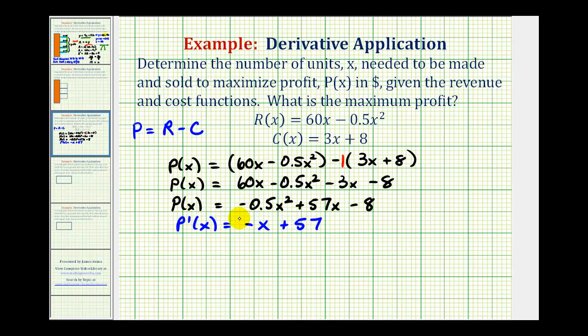Notice how this derivative is never going to be undefined, so let's set it equal to 0 and solve for x. So this equation here is pretty straightforward to solve. We would add x to both sides of the equation. We would have 57 equals x.